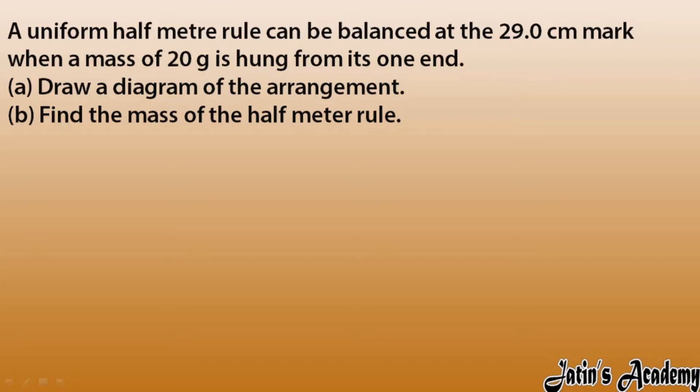Let's see the next question. We have a uniform half meter rule, not a full meter. This is only a half meter rule, so I'm considering AB, and this is only 50 centimeters. So it can be balanced at 29 centimeters. For example, this is the 0 mark, this is the 50 mark, so at 25 might be here. So I got 29 here. This is a fulcrum point.